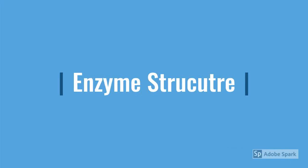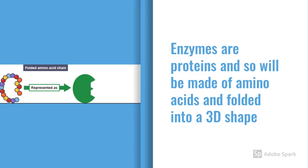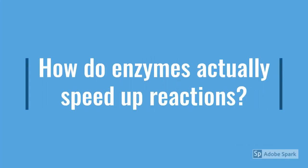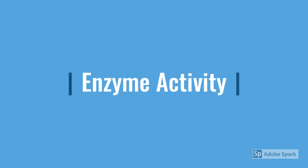Now let's talk about enzyme structure, because enzyme structure is the key to enzyme function. If you remember from my proteins video, proteins are made of amino acids and then folded into a 3D shape, which determines their function. The same also applies to enzymes, because they are proteins. Let's take an even closer look at how enzymes speed up reactions — enzyme activity.